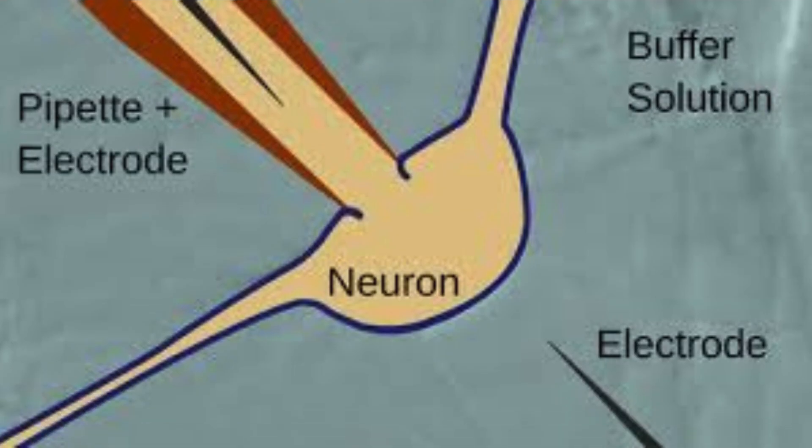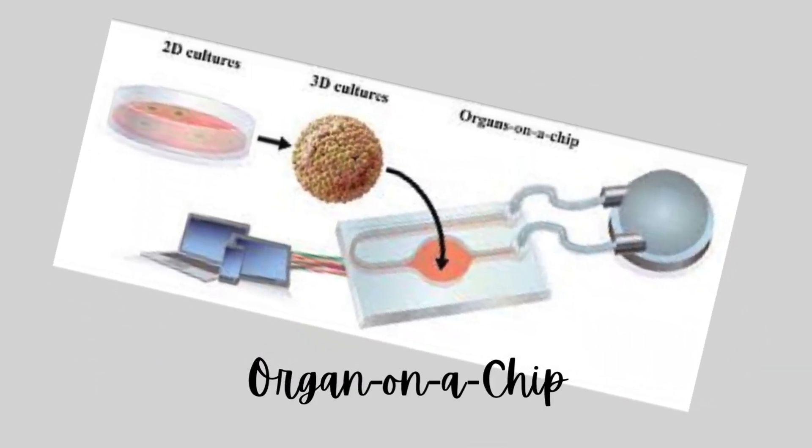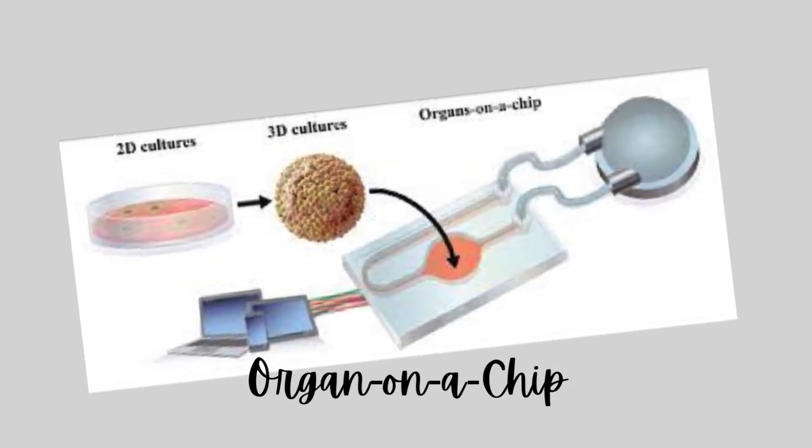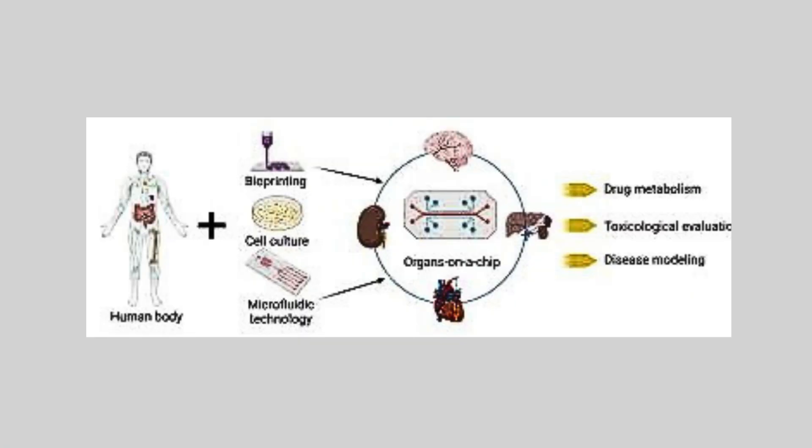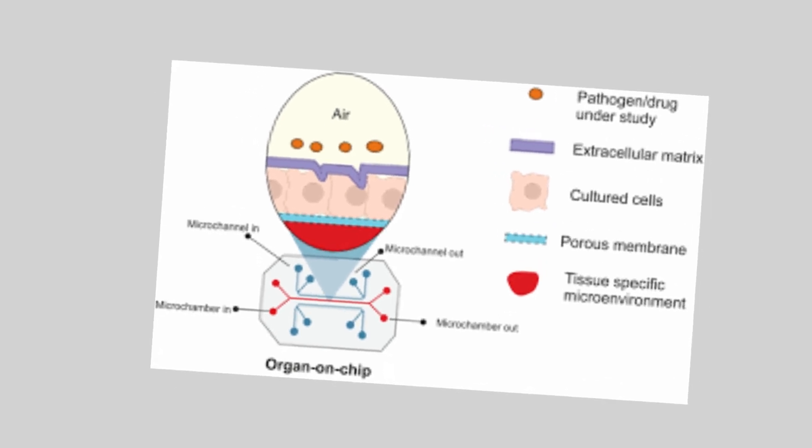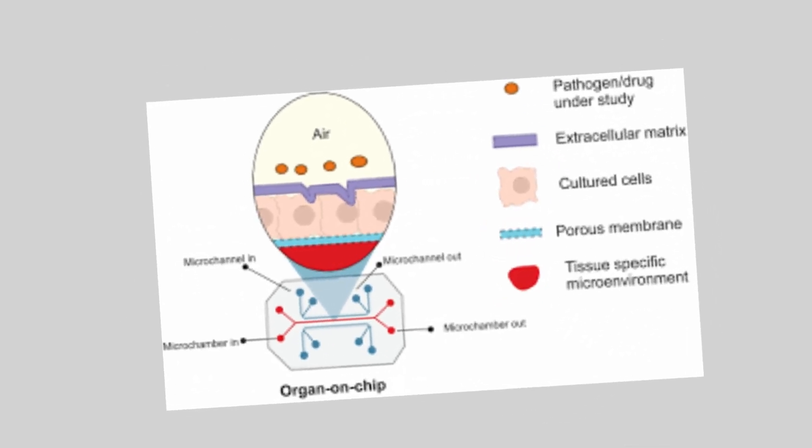B. Organ-on-a-chip: Purpose - this cutting-edge technology mimics the microenvironment of human organs, including the brain-on-a-chip. Method - cells from the brain or other relevant tissues are placed on a chip that can simulate physiological conditions. This model allows for testing drug effects in a more human-like environment without the use of animal models. Application - used to study CNS disorders, neurodegenerative diseases, and drug toxicity. It is also a promising alternative to animal models.